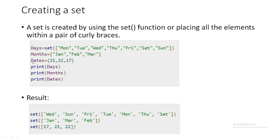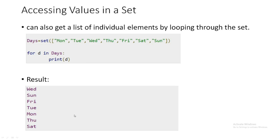Printing all these sets will result in three sets: days, months, and dates. To access values in a set, you can loop through it. For example, if you have a set named days with elements Monday through Sunday, using 'for d in days: print(d)' will print all items in the set.